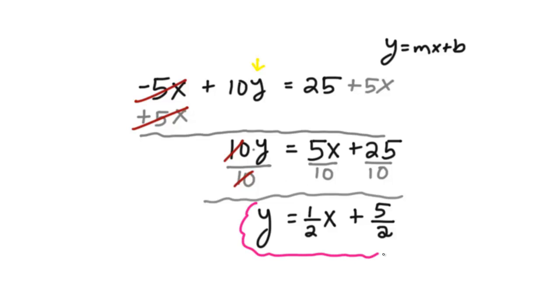We have y equals 1 half x plus 5 over 2. So we start off with this original equation, and we did the work, and we ended up with this guy here. The slope is 1 half.